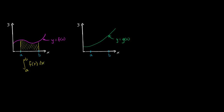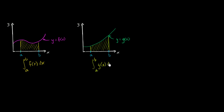We can do the same thing over here. We could call this area — the area under the curve y equals g of x above the positive x-axis between x equals a and x equals b — the definite integral from a to b of g of x dx.